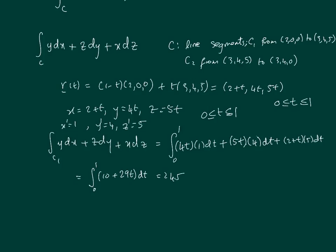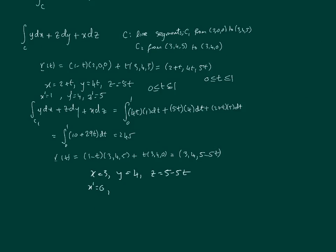In the same way, we'll do the second line segment C₂. For C₂, as we did before, it's (1-t) times the starting point (3,4,5) plus t times the end point (3,4,0). This is for line segments. That becomes r(t) = (3, 4, 5-5t), which means x' = 0, y' = 0, z' = -5. Again, t is between 0 and 1.